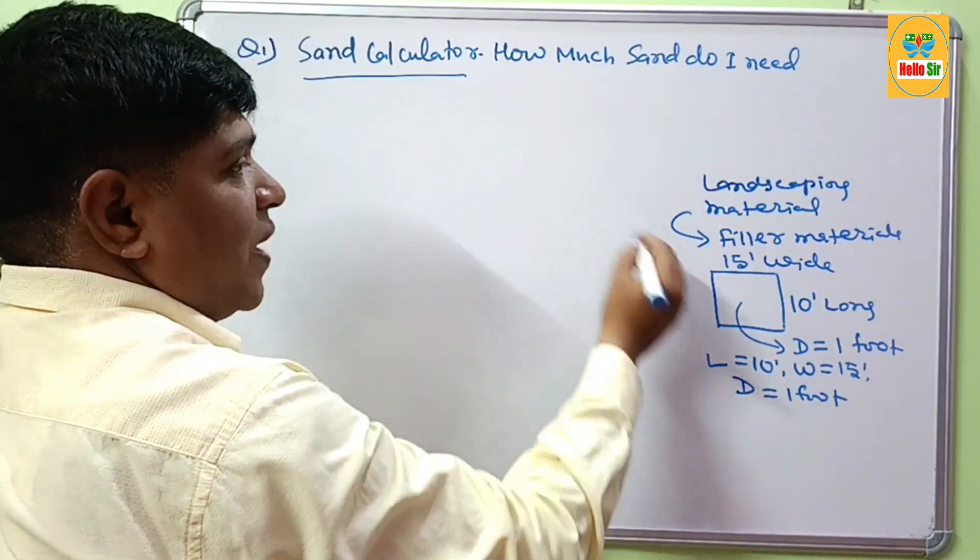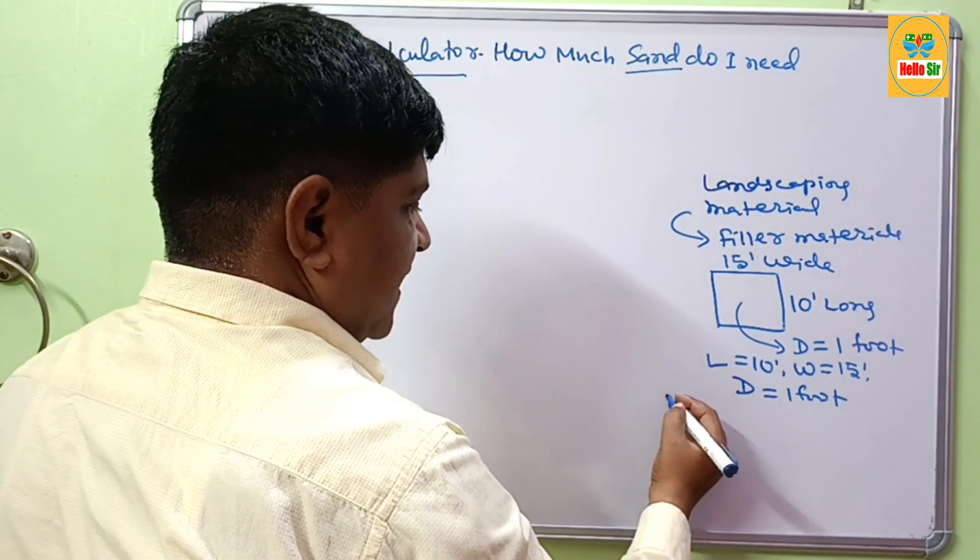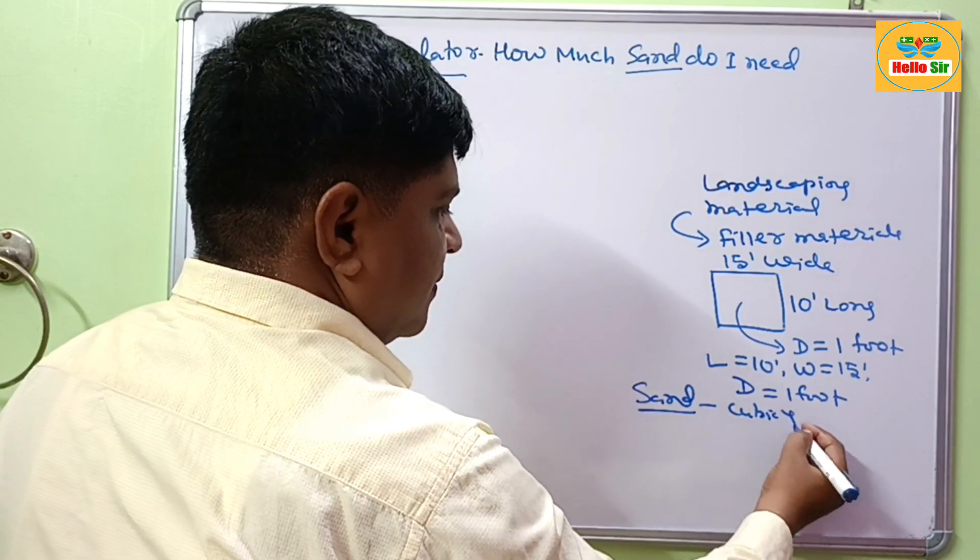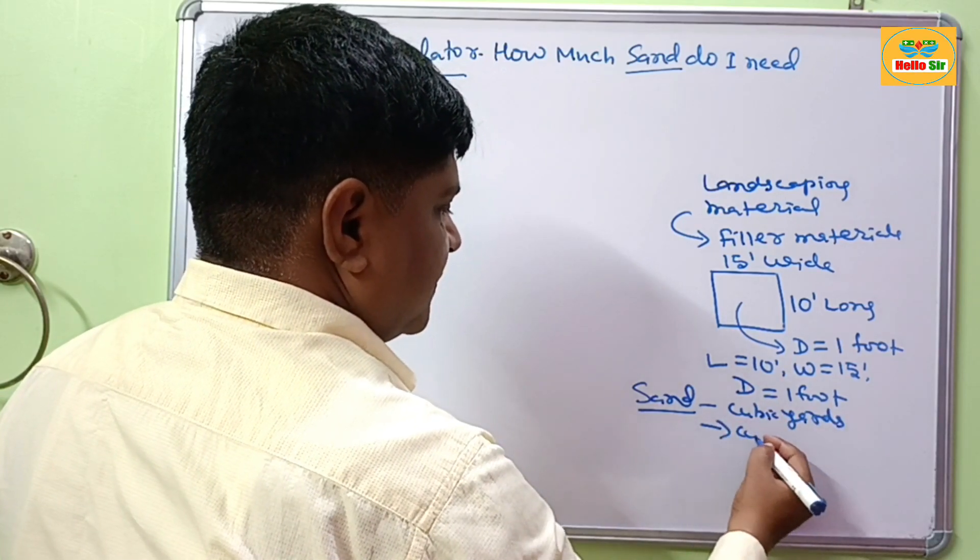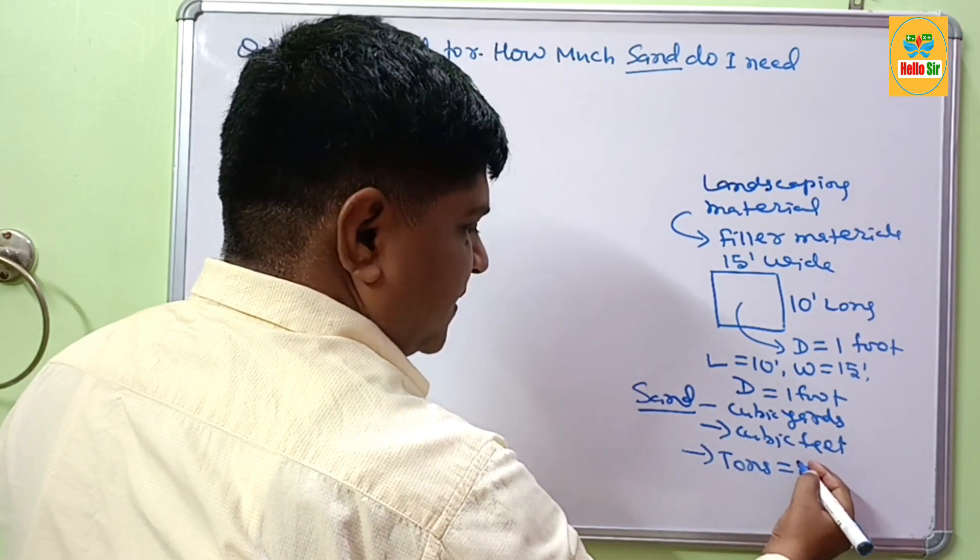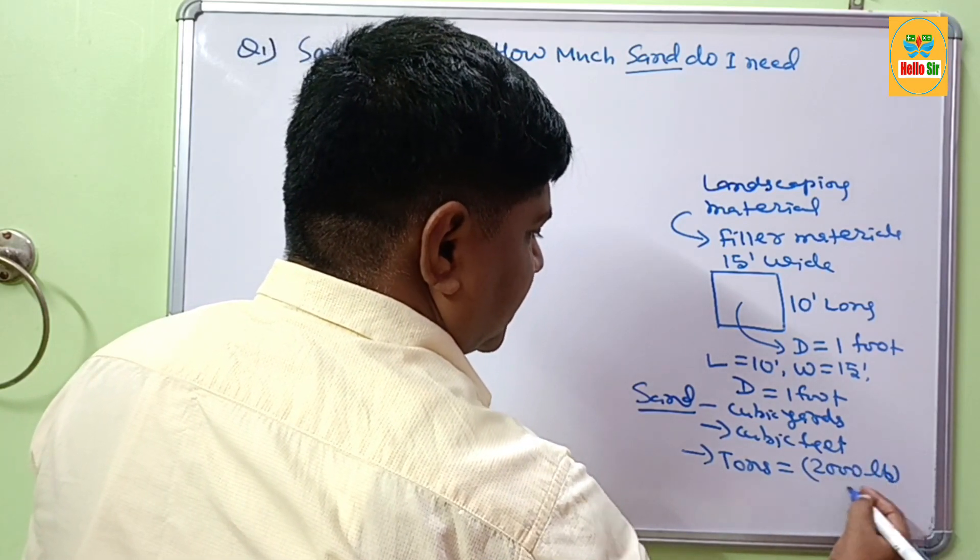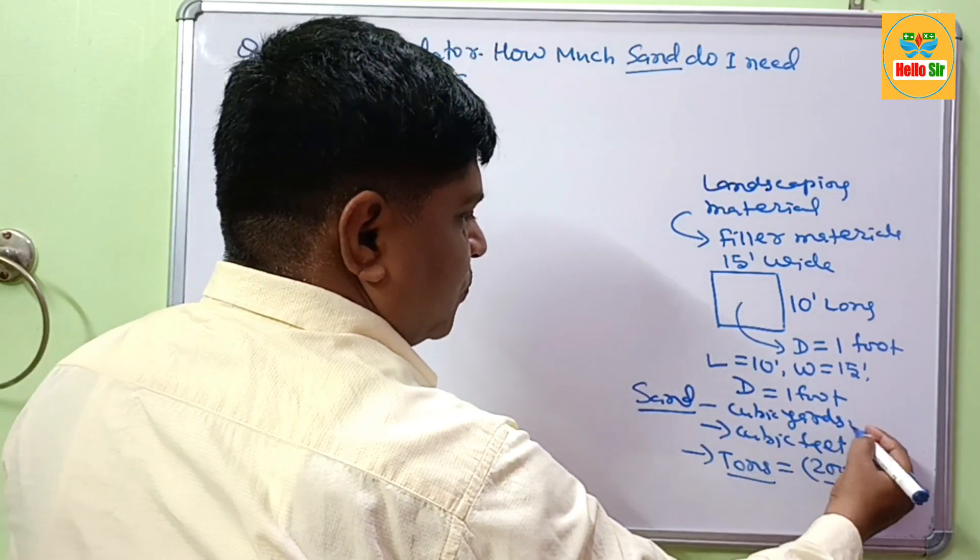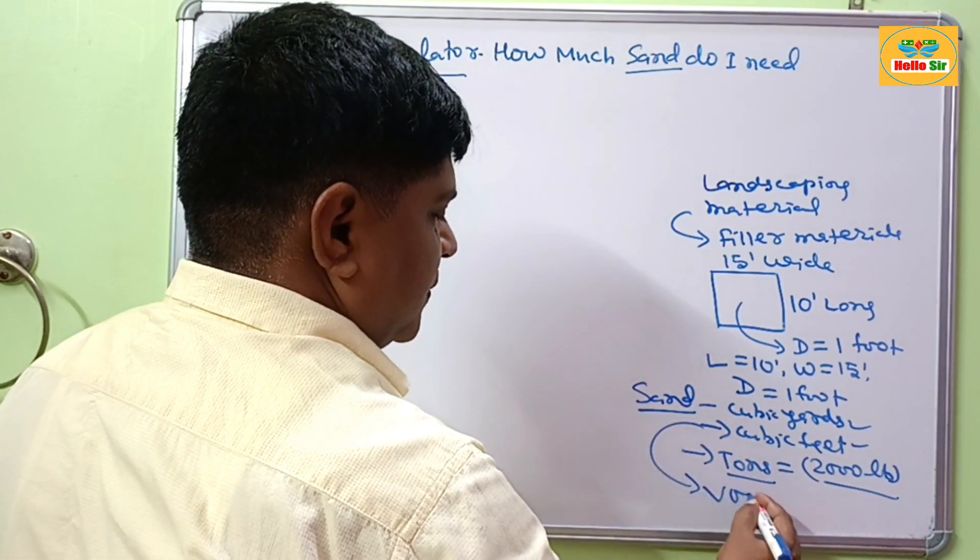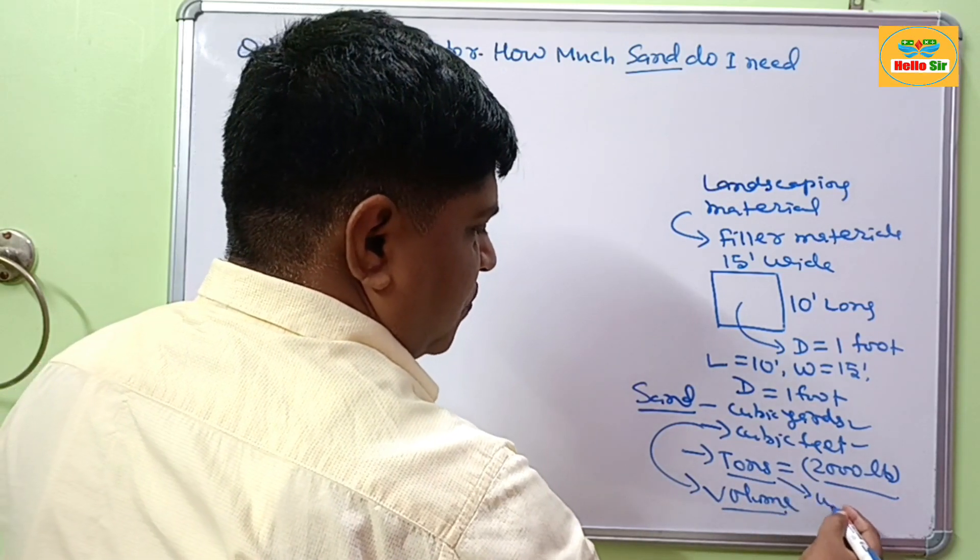How much sand is required to fill this area? Construction material sand can be measured in cubic yards, cubic feet, and imperial tons. One ton equals 2000 pounds. These measurements are used to measure volume, and tons are used for weight.